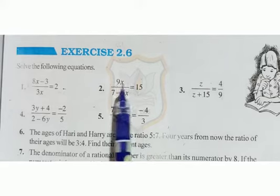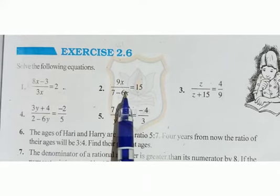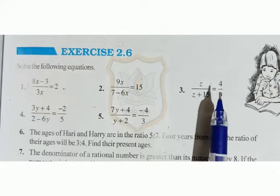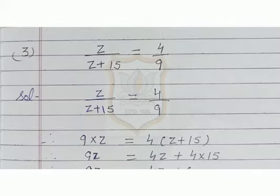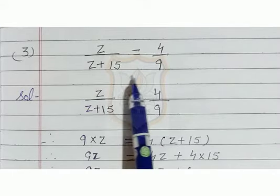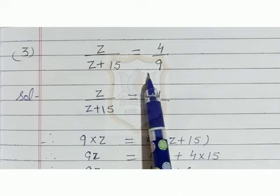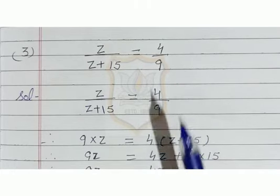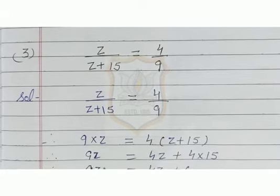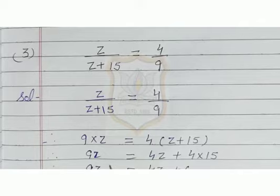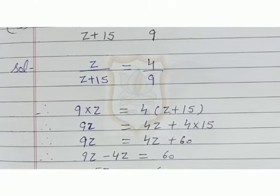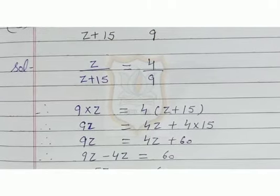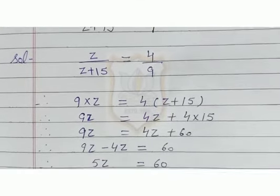The second sum you have to do by yourself. Now we will solve the third sum. The third sum is: z upon z plus 15 is equal to 4 upon 9. Here we will use cross multiplication. We will multiply 9 by z and 4 by z plus 15.